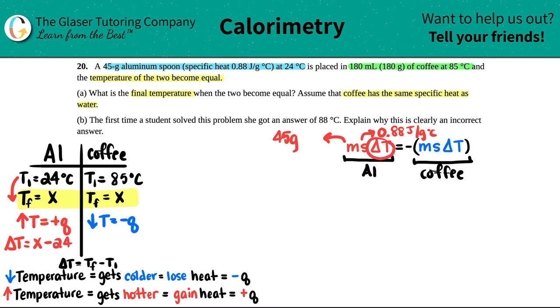Now moving on to the coffee side. The mass they told me was 180 grams, so 180 grams. They didn't tell me specific heat, but they did tell me that the coffee had the same specific heat of water. This is the only one you have to memorize—water's specific heat is 4.184 joules per gram degrees Celsius. Same thing as before, we just have to write the delta T as a formula. Delta T for the coffee would be final, which is X, minus 85, which is the original.